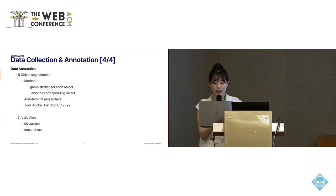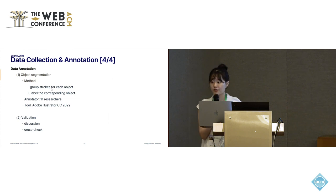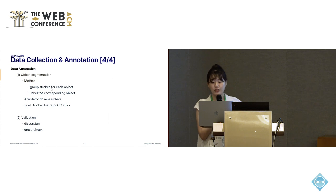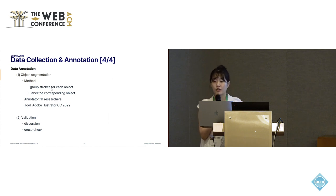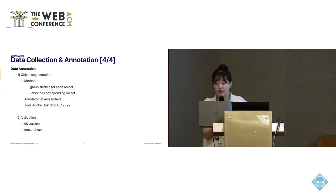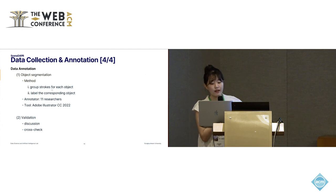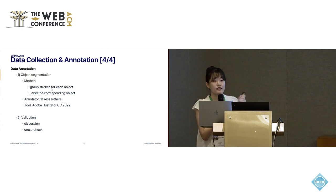After collecting data, we performed object detection and segmentation for each object category. Initially, 11 researchers grouped strokes for each object and labeled the corresponding object names. If the object name was difficult to identify, the annotators discussed and finalized their decision. Also, by cross-checking each sketch, we validated the quality of our dataset.